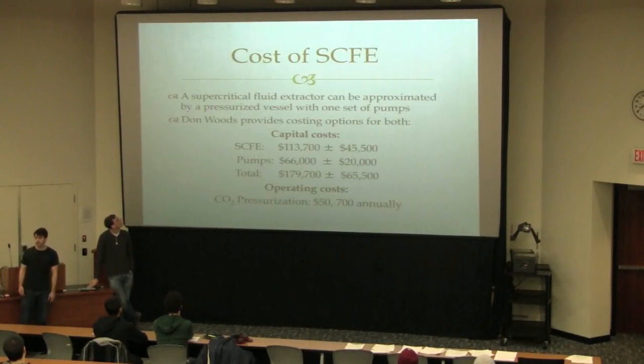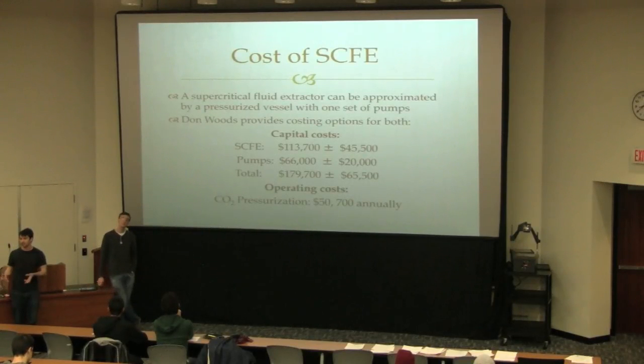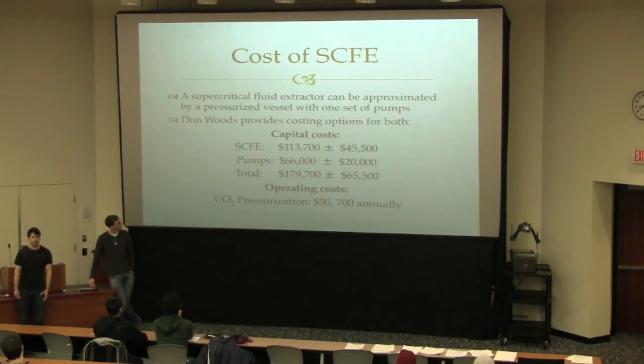So the actual cost of our extractor for 24 meters cubed, we modeled it as a single pressurized vessel and a set of pumps, because pretty much the extractor is one unit which is a giant pressurized vessel and it needs to have pressurized CO2 going in and then leaving after the extraction. So the total cost of this is going to be around $180,000 plus or minus $65,000, except the operating cost of running the extractor is actually $50,000 or $51,000 annually, which is actually a significant ratio of the entire capital cost.